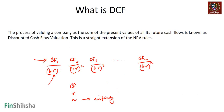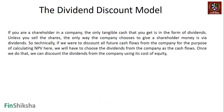We discount the cash flows the company will give us in future, and the sum of present values tells us the DCF value of the company. To solve the first question — what is the cash flow — we start with the dividend discount model (DDM). If you are a shareholder, the only tangible cash you get from a company is the dividend.